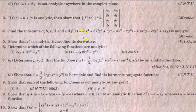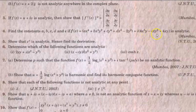If f(z) is equal to ax raised to 4 plus bx squared y squared plus cy raised to 4 plus dx squared minus 2y squared, plus i into 4x cubed y minus exy cubed plus 4xy, is analytic, then find the constants a, b, c, d, and e.